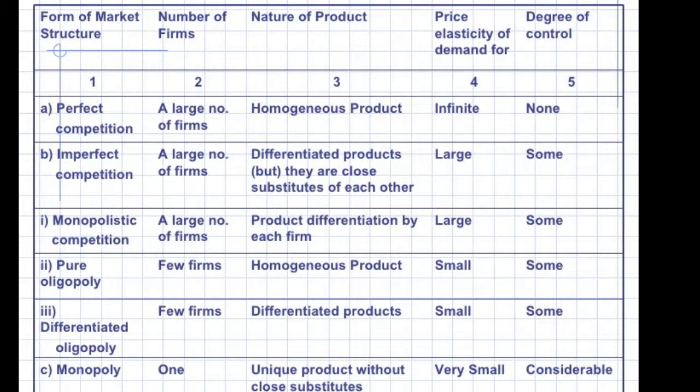If you take another variable, that is entry of supplier, in monopoly there is a block for entry as far as supplier is concerned, new supplier is concerned. Similarly, in perfect competition there is no barrier for supplier as well as for the buyer.